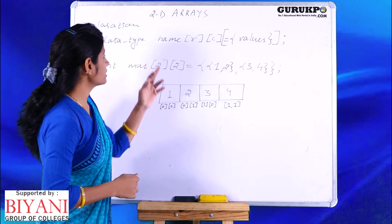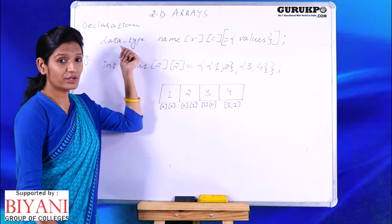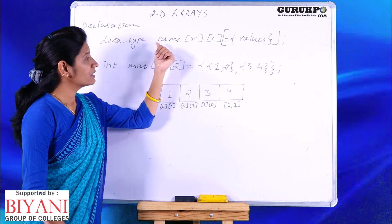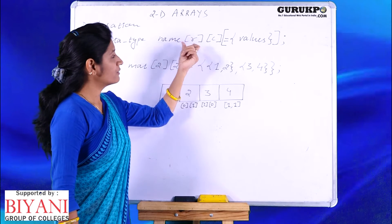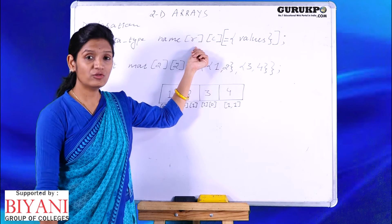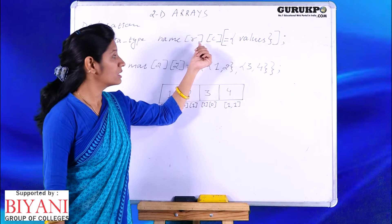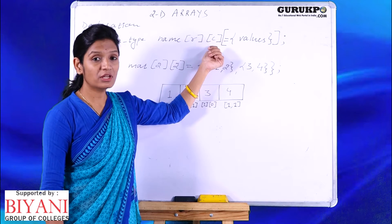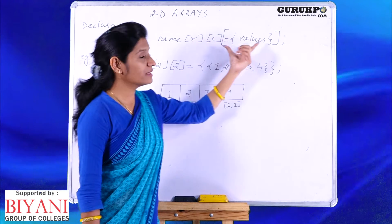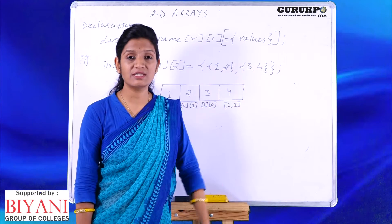The declaration for two dimensional arrays is: first you need to specify the data type, then name of the array, then first dimension of the array will give you the number of rows, second dimension will give the number of columns, and then the initial values if you want to initialize the array.